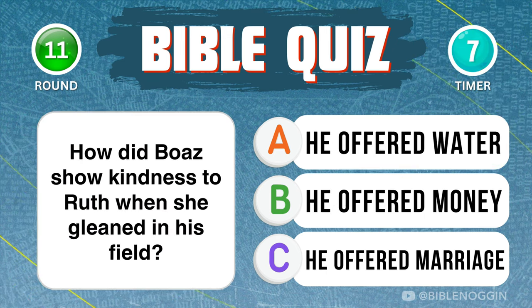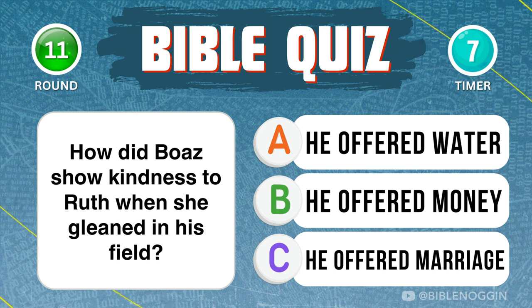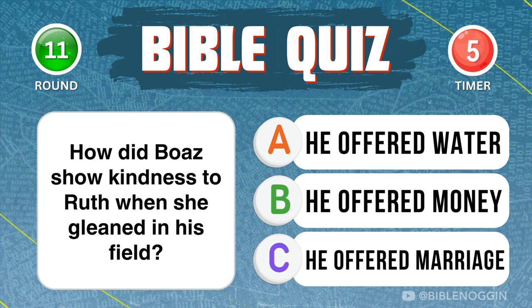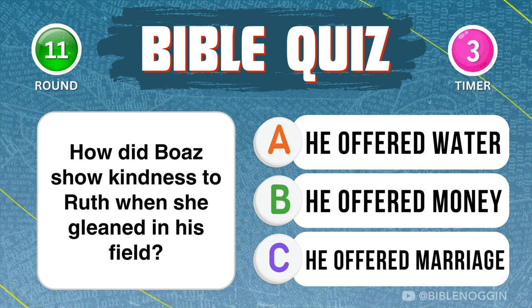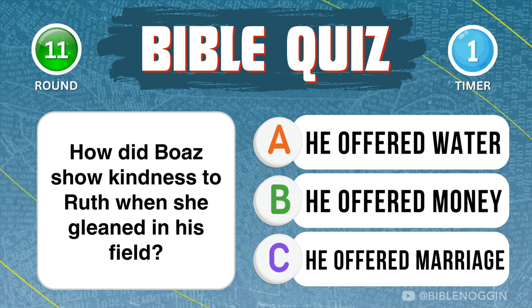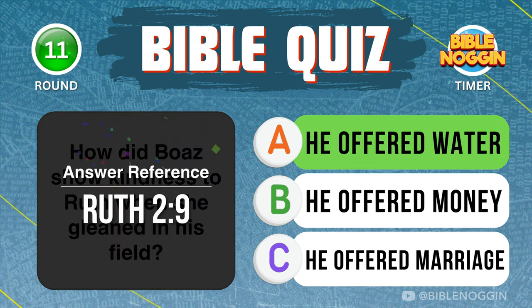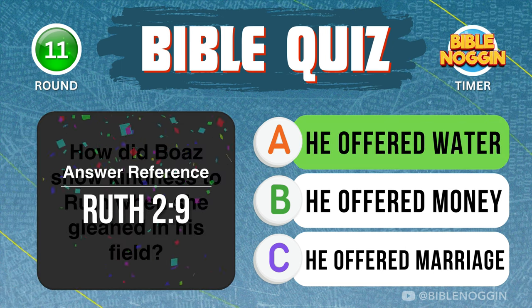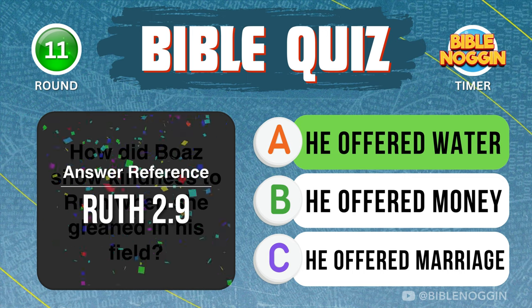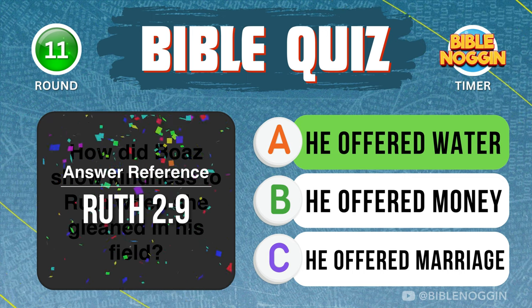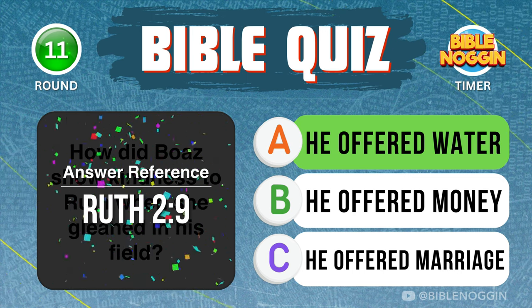Question 11: How did Boaz show kindness to Ruth when she gleaned in his field? He offered her water — found in Ruth chapter 2, verse 9.